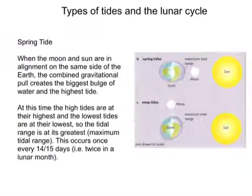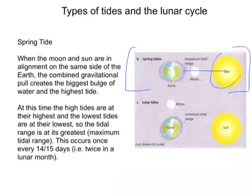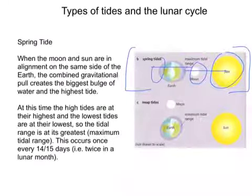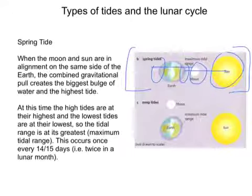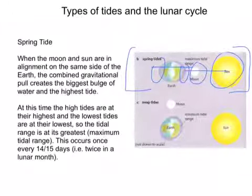Starting with spring tides: as you can see from the diagram, the moon and the sun are in alignment with the earth. As a result, we have the combined gravitational pull of the sun and the moon, which creates the biggest bulge of water and the highest tide. The high tides are at the highest and the lowest tides are at their lowest, so the vertical distance between high and low tides is at its greatest — this is called the maximum tidal range. This occurs every 14 to 15 days, so twice in a lunar month.